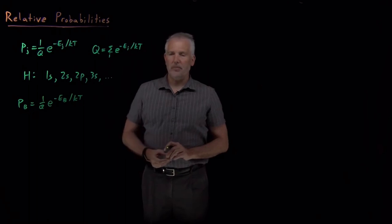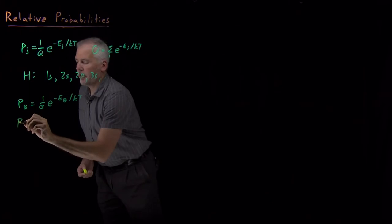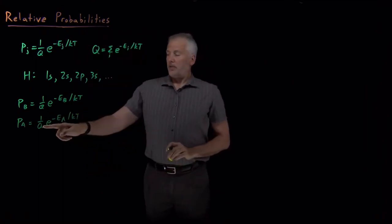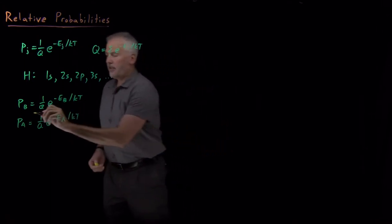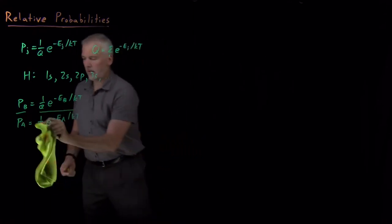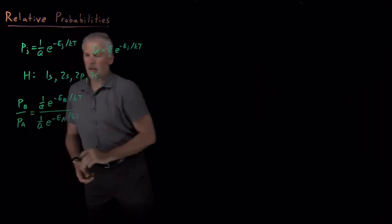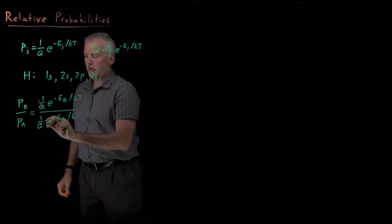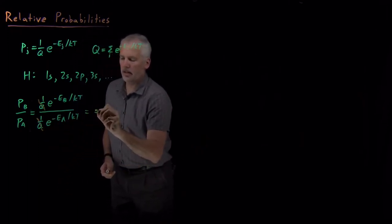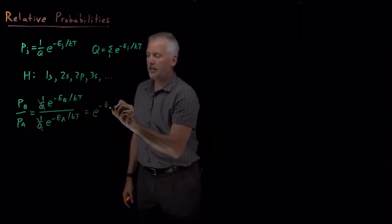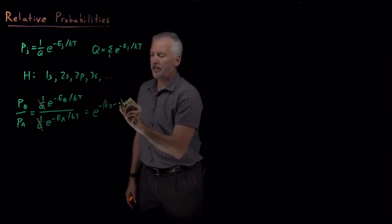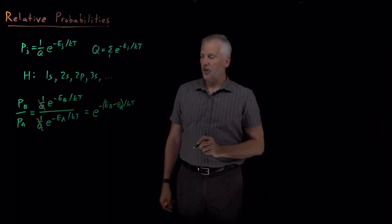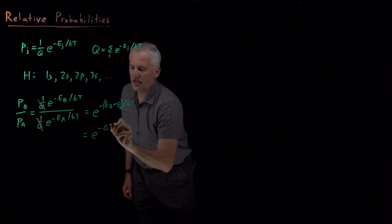Using the Boltzmann distribution, the probability of state B is 1 over Q times e to the minus energy B over kT, and the probability of state A is 1 over Q times e to the minus energy A over kT. If I divide these two, the ratio PB to PA is just the Boltzmann term for B divided by the Boltzmann term for A. The Q's cancel, and the ratio of those two exponentials is e to the minus EB over kT divided by e to the minus EA over kT.